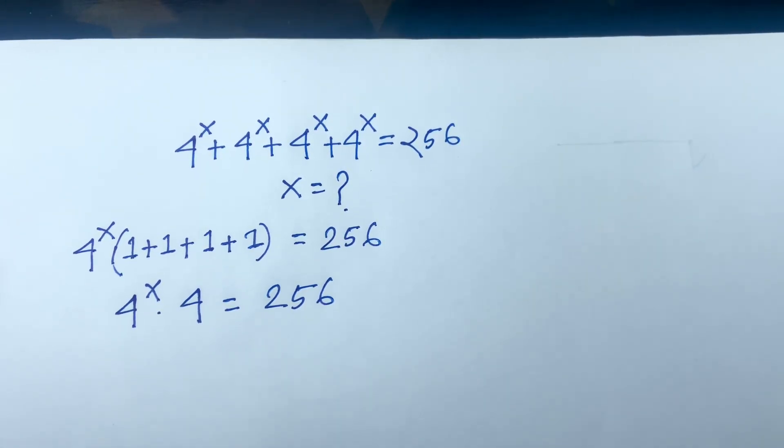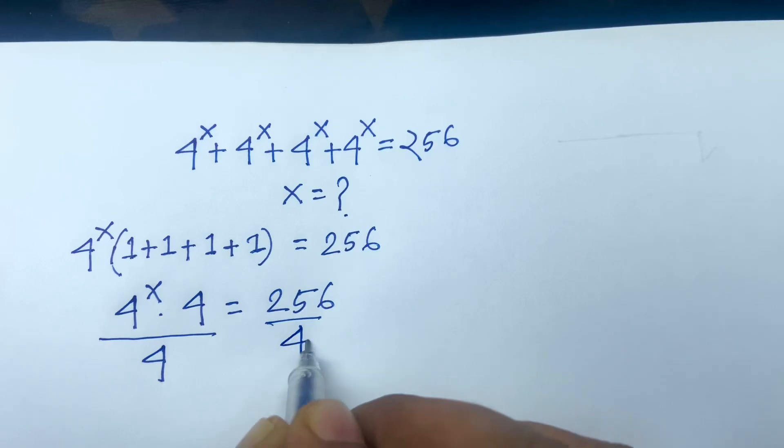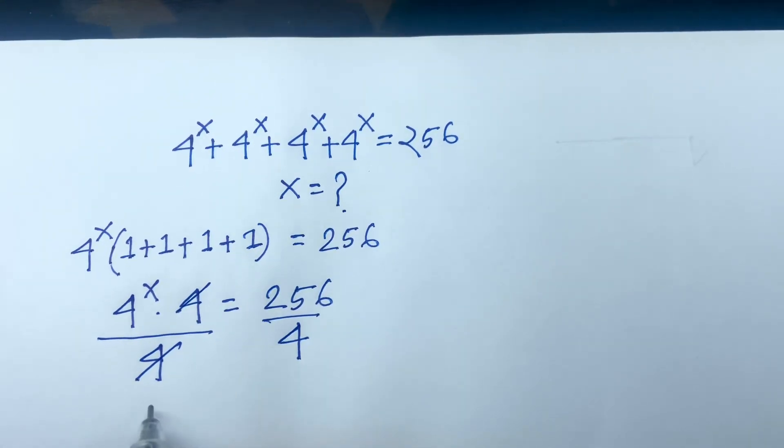Then in this case, if I divide both sides by 4, the 4s cancel. And we will find out 4 to the power x equals...